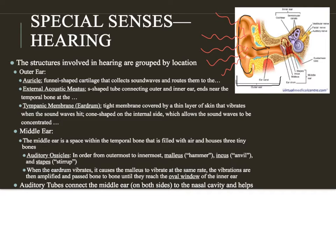The outer ear ends at a very tight skin-like structure called the tympanic membrane. Tympanic means drum in Latin, so this is also just called the eardrum. As the sound waves reach the eardrum, it causes that structure to vibrate — just like the top of a drum vibrates when struck by a drumstick. When sound waves hit the eardrum, it vibrates.